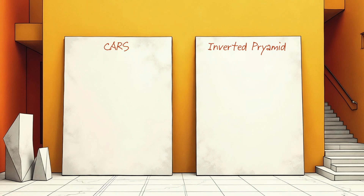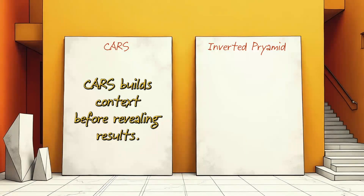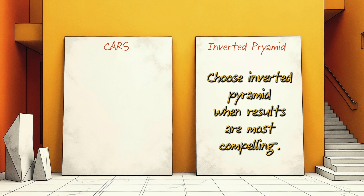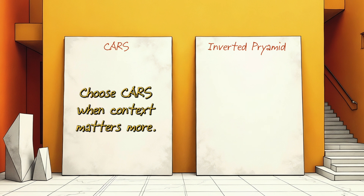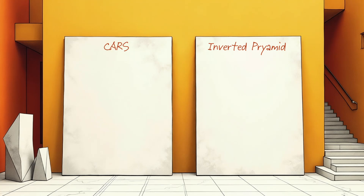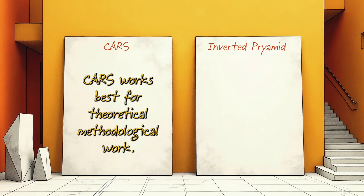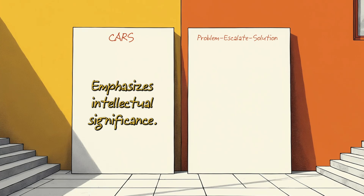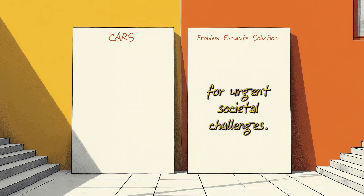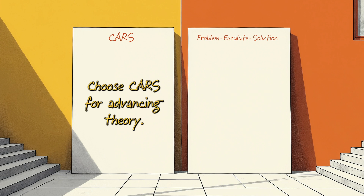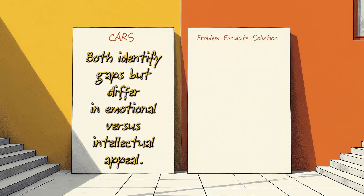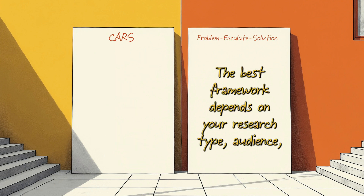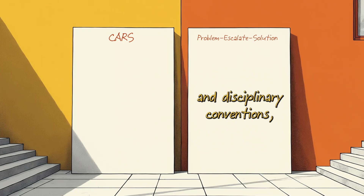CARS vs. the inverted pyramid: the inverted pyramid leads with findings, while CARS builds context before revealing results. Choose the inverted pyramid when results are most compelling; choose CARS when context matters more. The inverted pyramid works well in clinical applied fields; CARS works best for theoretical and methodological work. CARS vs. problem-escalate-solution: problem-escalate-solution dramatizes urgency, while CARS emphasizes intellectual significance. Choose problem-escalate-solution for urgent societal challenges; choose CARS for advancing theory. Both identify gaps but differ in emotional versus intellectual appeal. The best framework depends on your research type, audience, and disciplinary conventions.